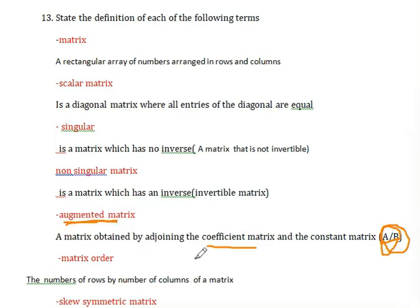Matrix order: The number of rows by the number of columns of a matrix is the size of the matrix or order of the matrix.